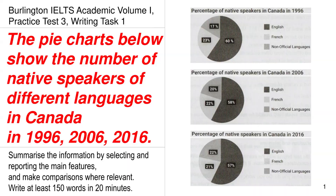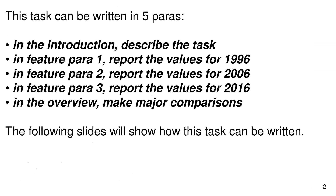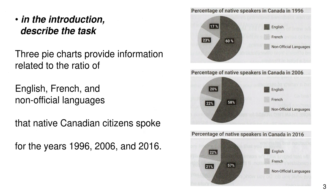This task can be written in five paragraphs: in the introduction, describe the task; in Feature Para 1, report the values for 1996; in Feature Para 2, report the values for 2006; in Feature Para 3, report the values for 2016; and in the overview, make major comparisons. The following slides will show how this task can be written.